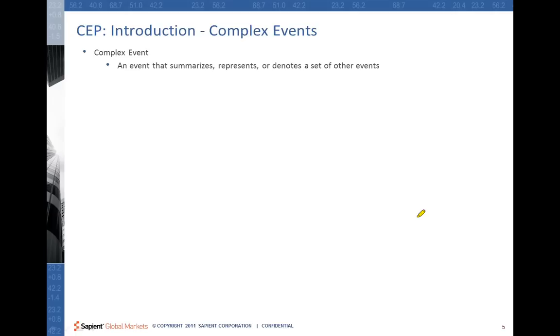We have been seeing what events and event stream processing are. Now let's see what complex events mean. A complex event doesn't happen on its own. A pattern of events over a time period could result in a complex event — it's an event that summarizes a set of other events. It's born out of a pattern applied on a set of other events. Based on the type of event that happens, it could lead to an opportunity or a threat.